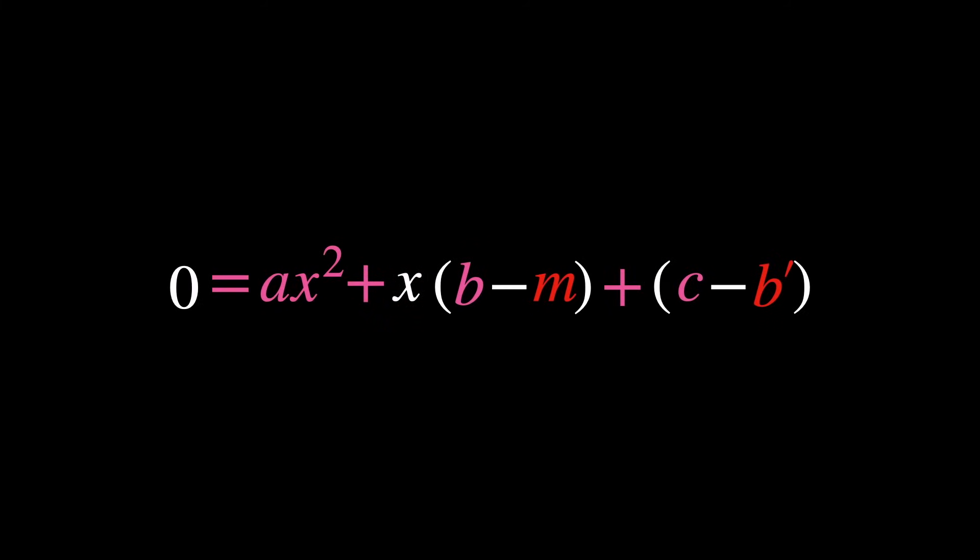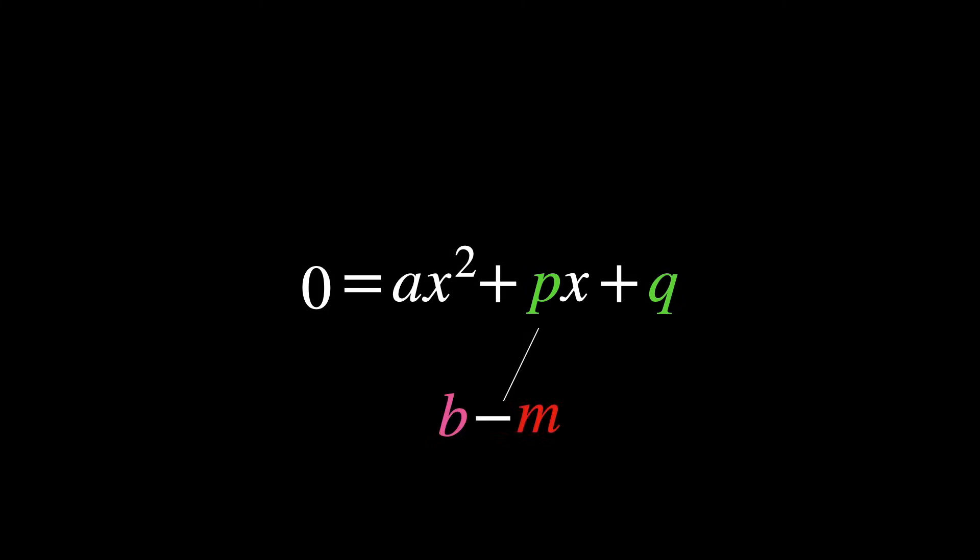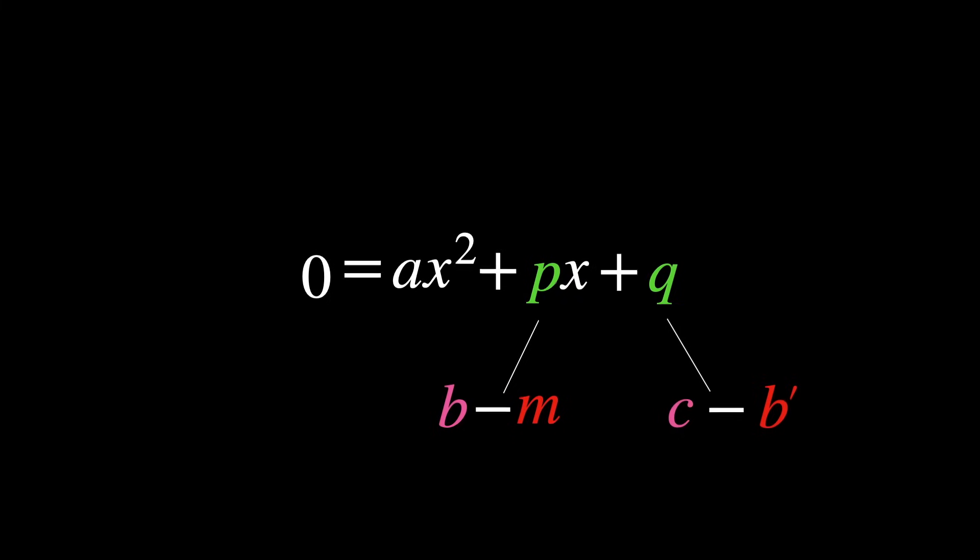Collect all the terms on one side of the equation to create a single polynomial equation: ax² plus (b minus m)x plus (c minus b') equals zero. Here, ax² plus px plus q equals zero is a general quadratic equation, where p equals b minus m, the combined coefficient of x, and q is c minus b', the constant term after rearranging.